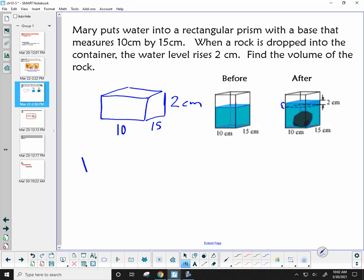Because we have a prism, we know volume equals area of the base times height. So my volume in this case, my base in this case is going to be 10 by 15. And then the height is 2. So what do we get for our volume? 300 cubic centimeters.